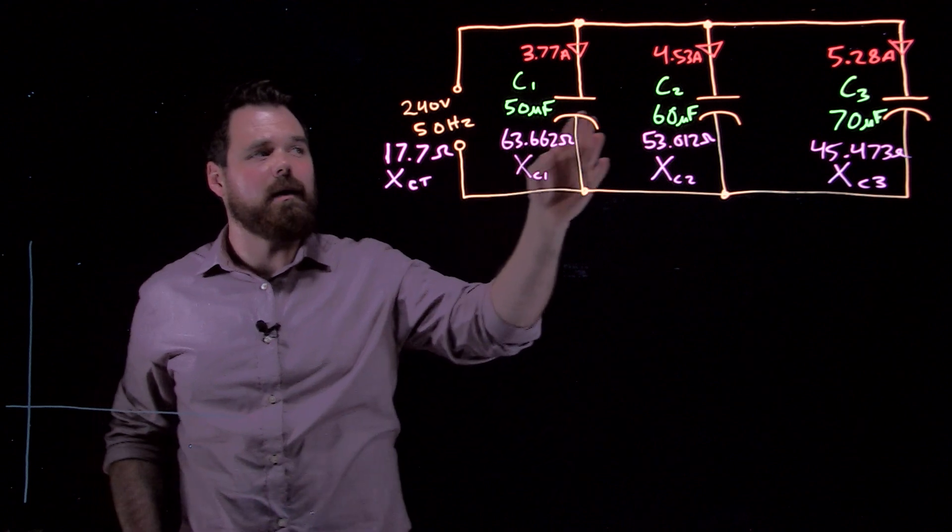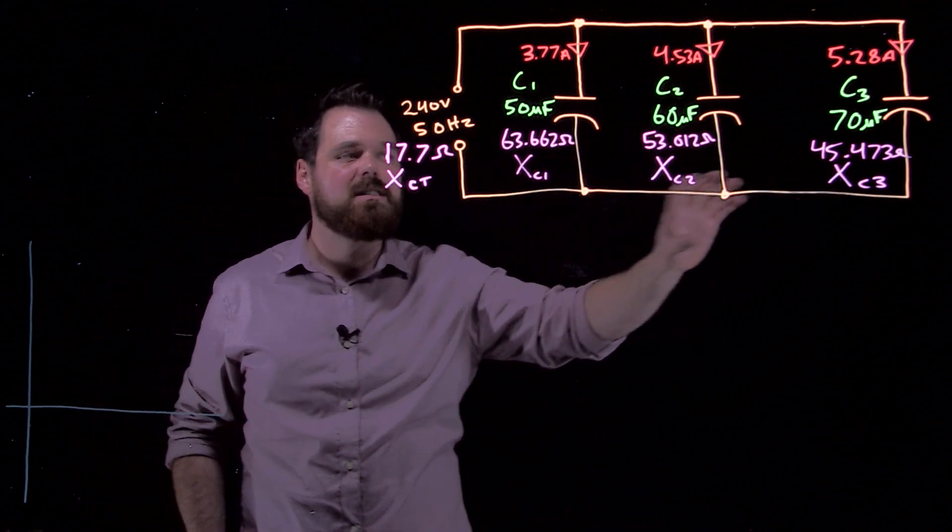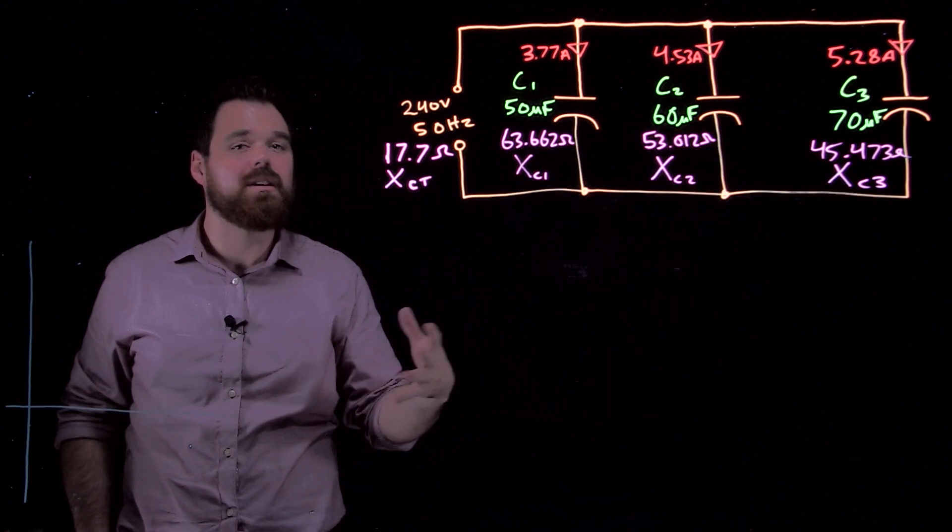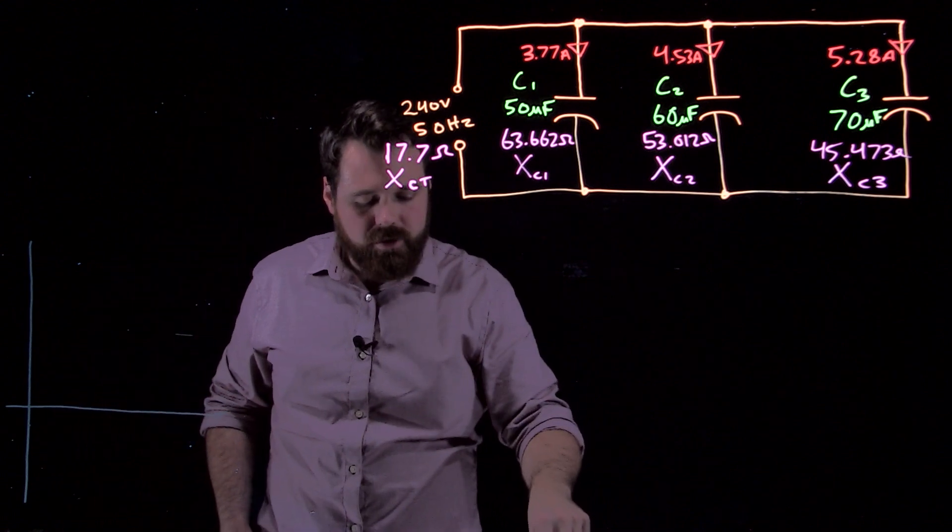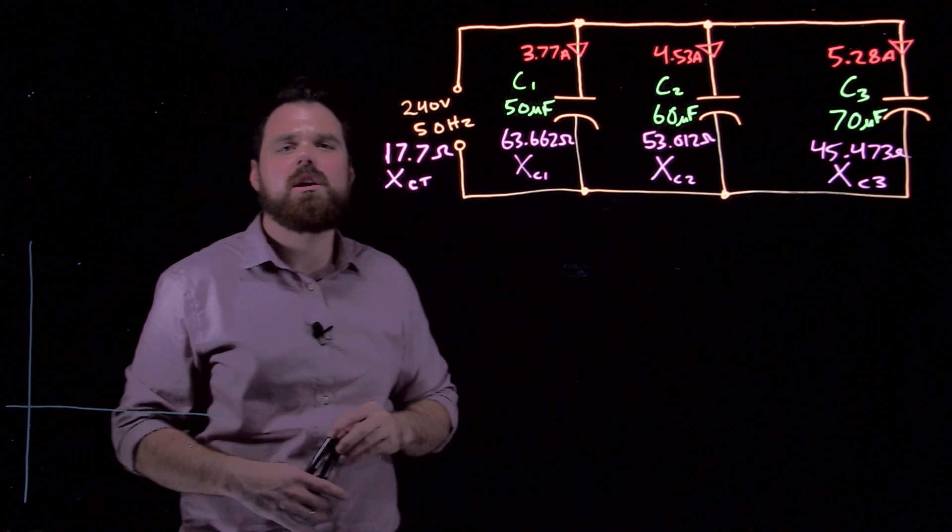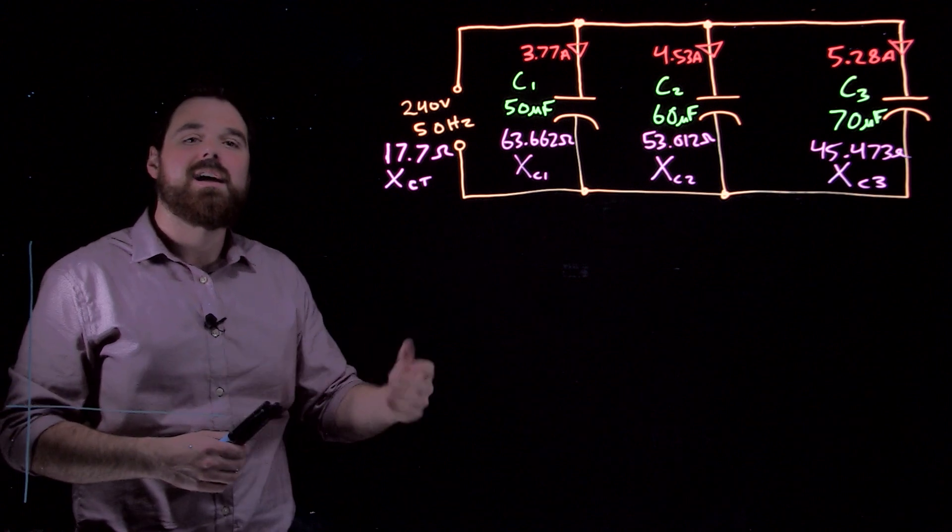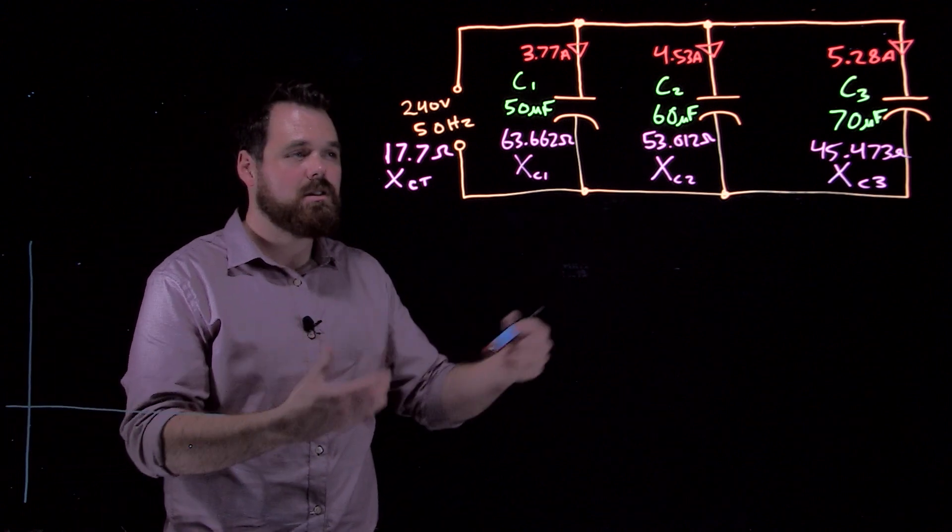Before, we talked about how to add up the capacitance and the capacitive reactance in a parallel circuit containing capacitors. I want to expand a little bit further and talk about the voltage and the current in parallel circuits containing capacitors.